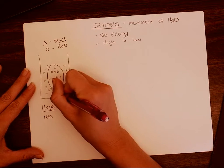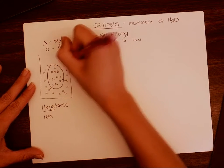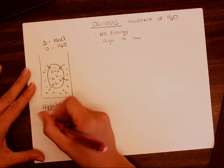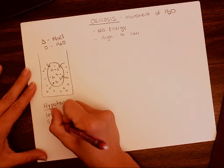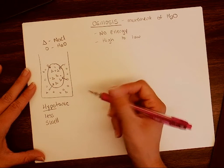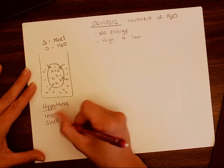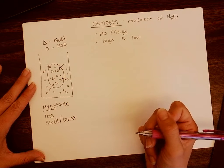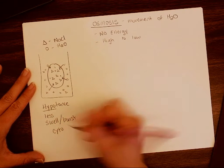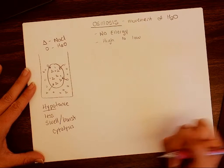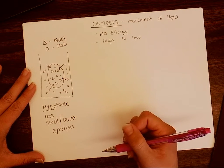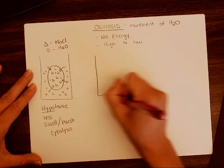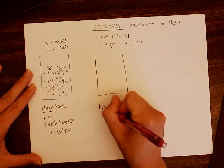The concentration of water is much higher outside than inside the cell, so using no energy, water is going to diffuse across this membrane from high to low concentration. The cell is going to swell as water keeps moving in. Eventually this could cause the cell to burst — this is called cytolysis. Cyto means cell and lysis means to break down, so our cells are breaking down in a hypotonic solution.